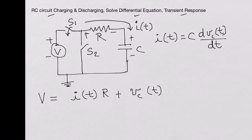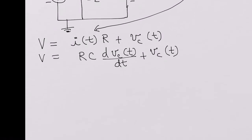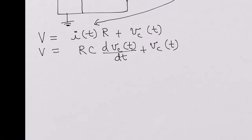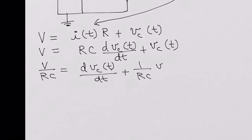Now let's substitute this into the equation. So we see that V = R·C · dV_C(T)/dt + V_C(T). Dividing the whole thing by RC on both sides gives: V/(RC) = dV_C(T)/dt + V_C(T)/(RC).